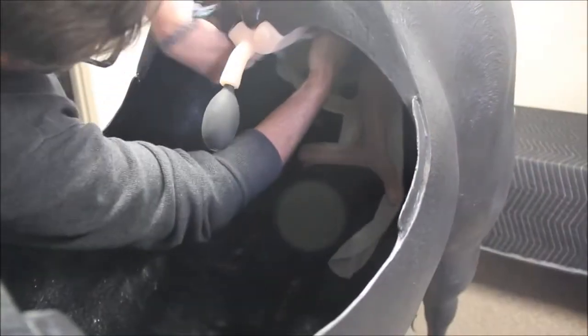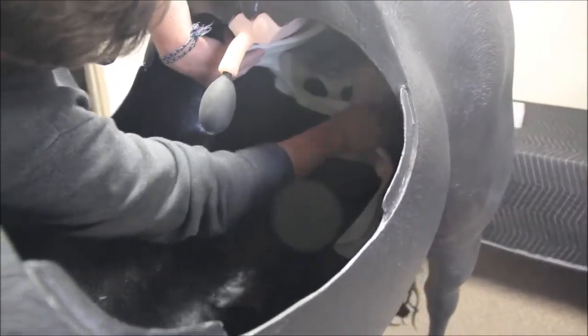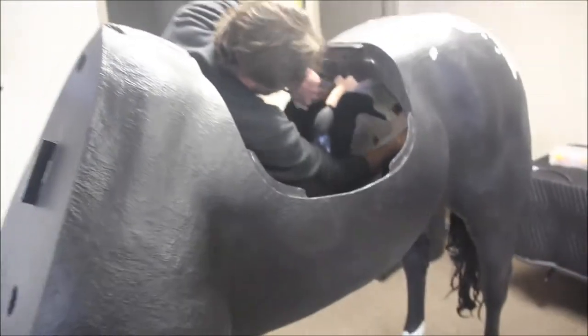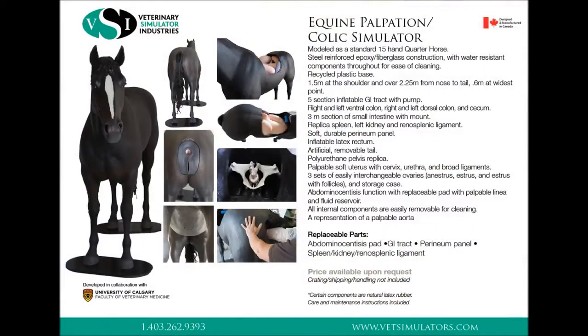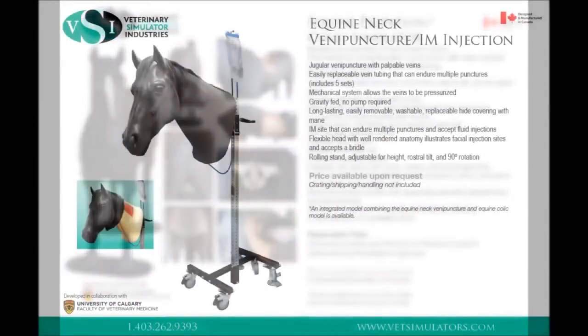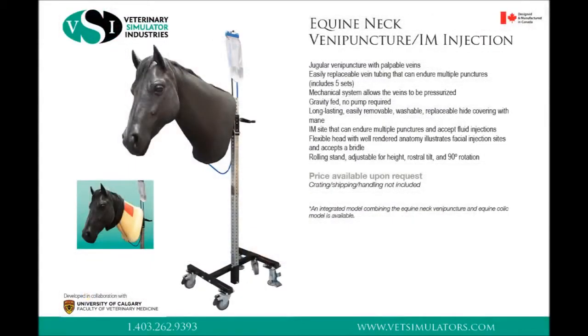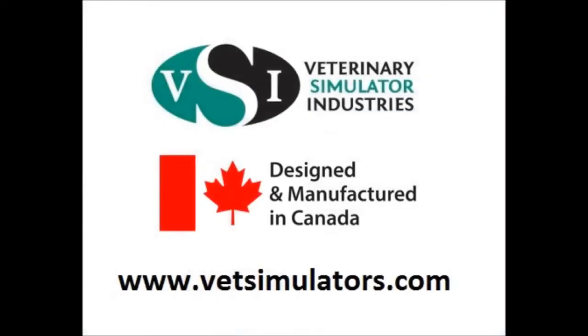The assembly of the equine palpation panel is the same in our full sized VSI palpation colic simulator. It offers many other features including equine neck venipuncture with intramuscular injection pads, an open mouth for applying a bridle, spleen, kidney, palpable aorta, GI tract with small intestine, and abdominocentesis pad. We also offer a standalone equine venipuncture unit with intramuscular injection pads and open mouth for applying a bridle.